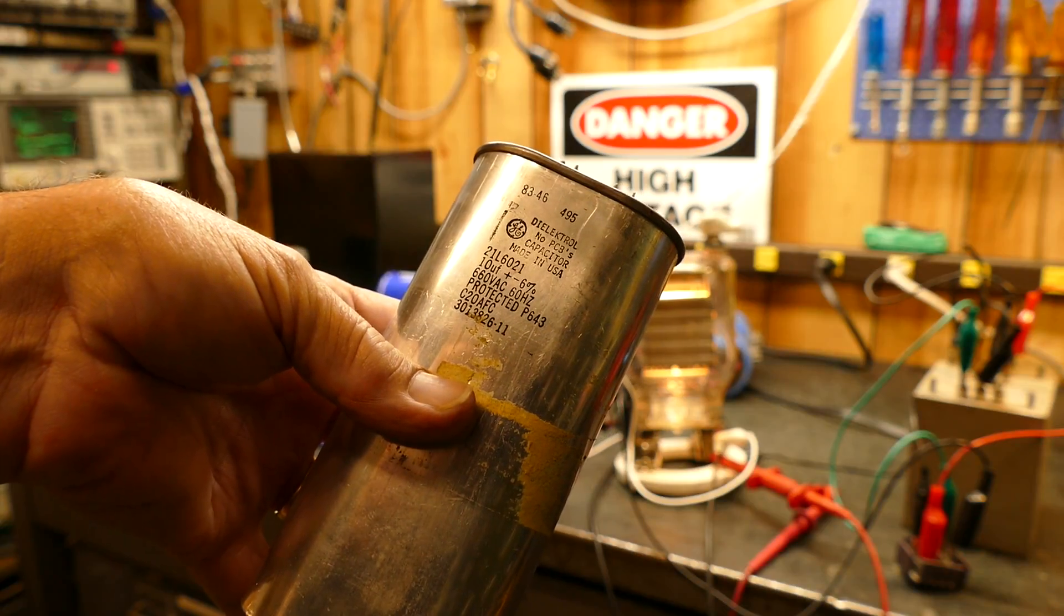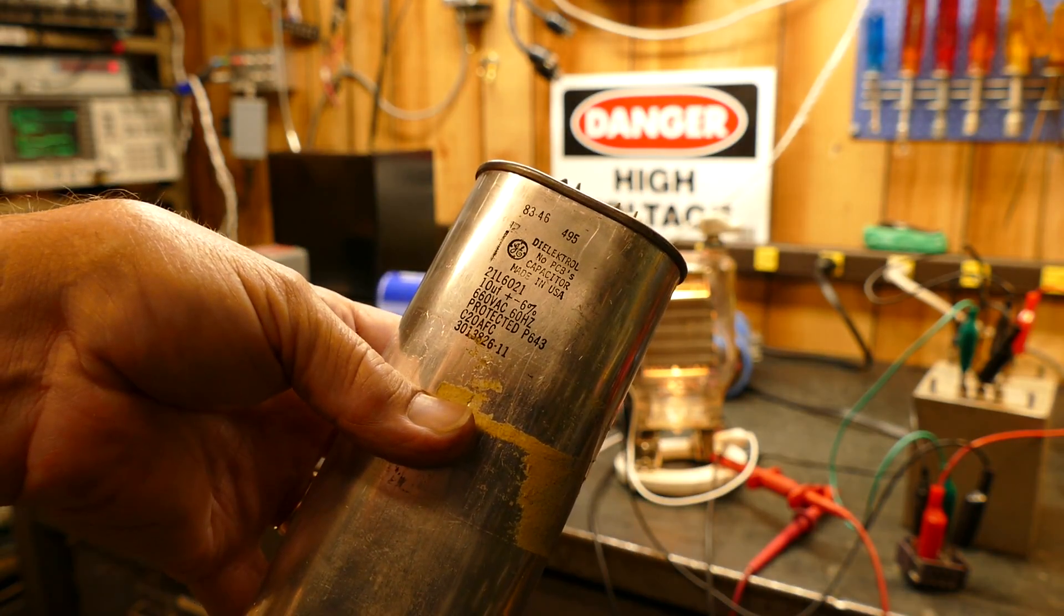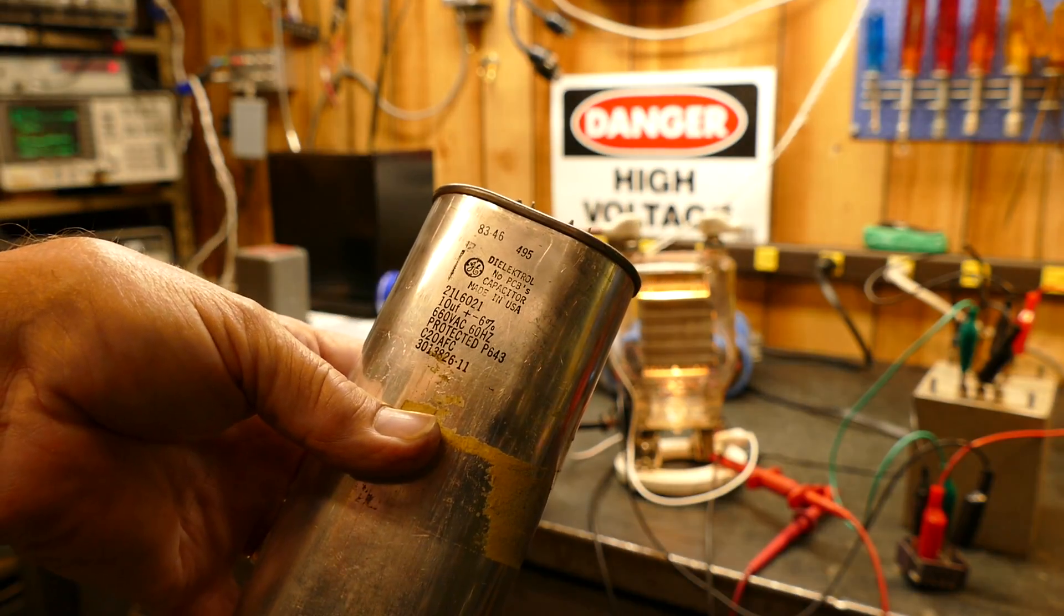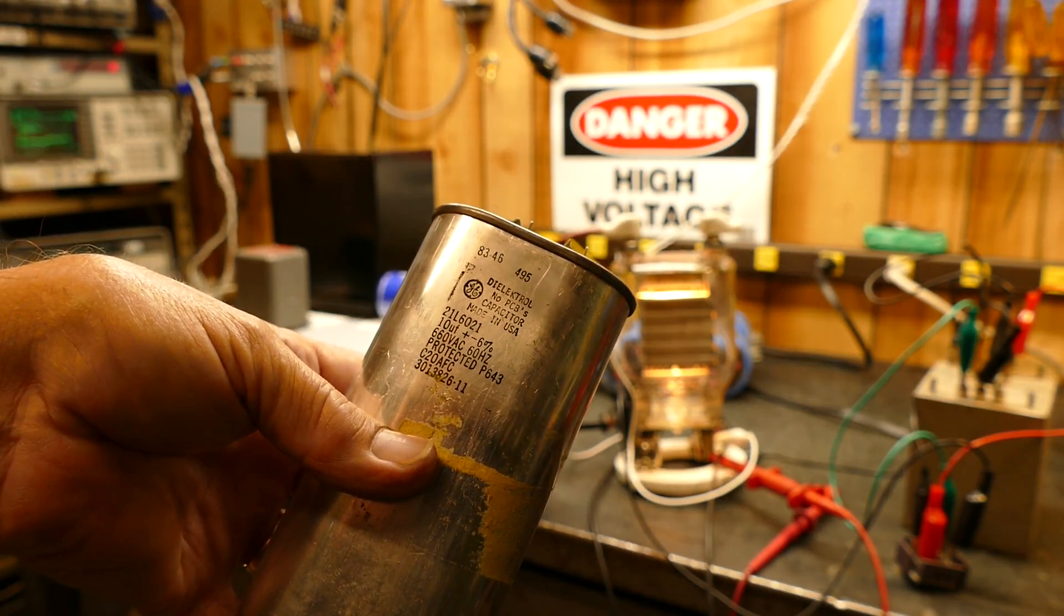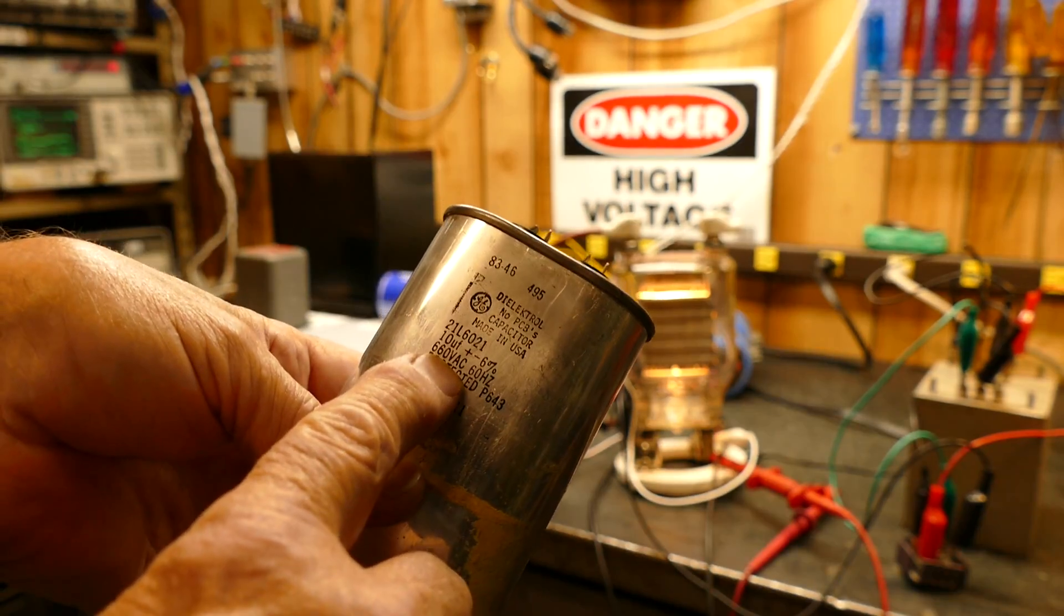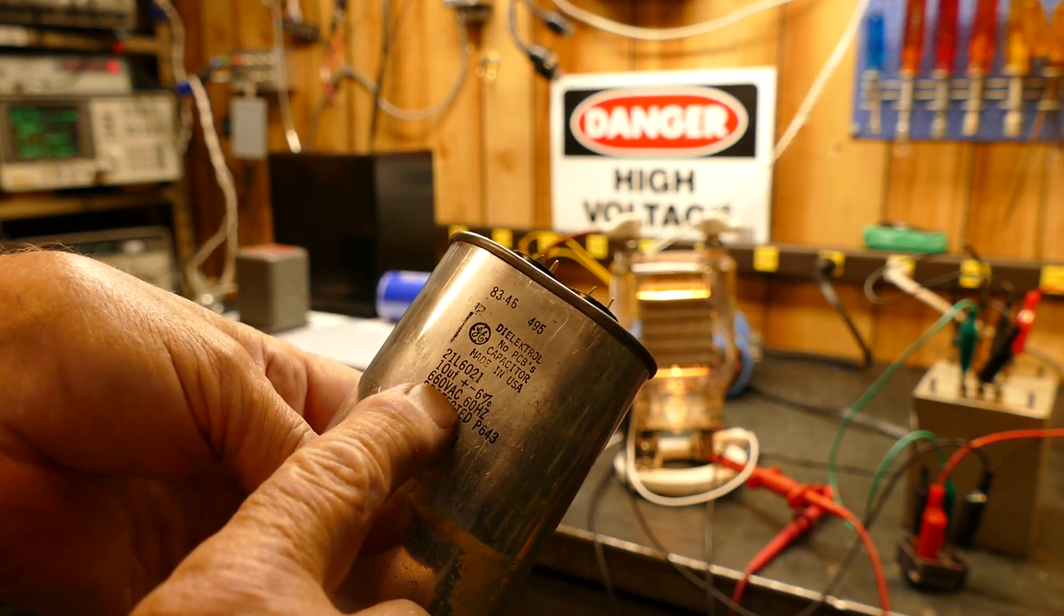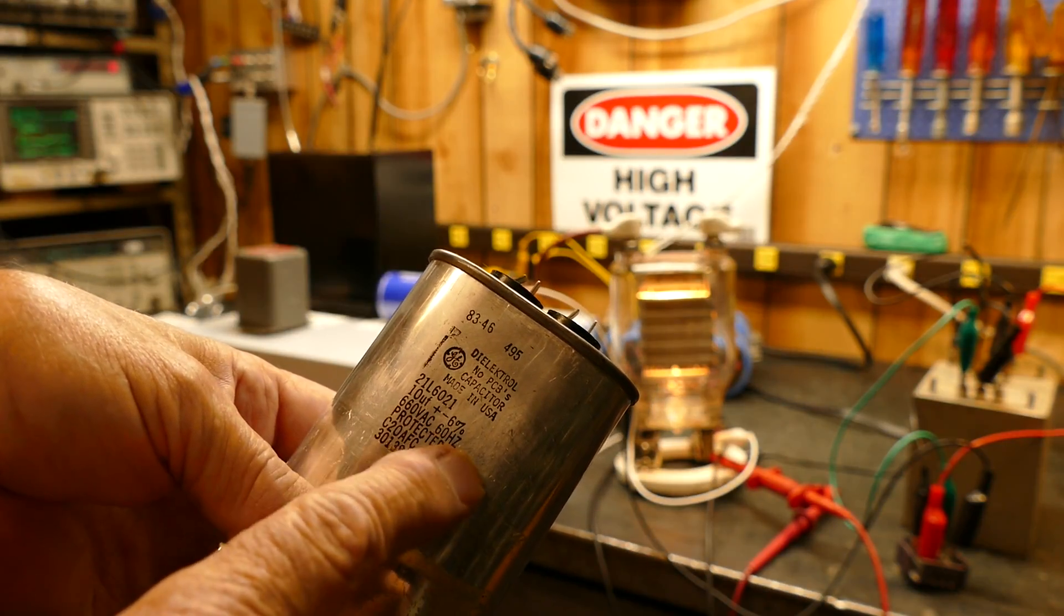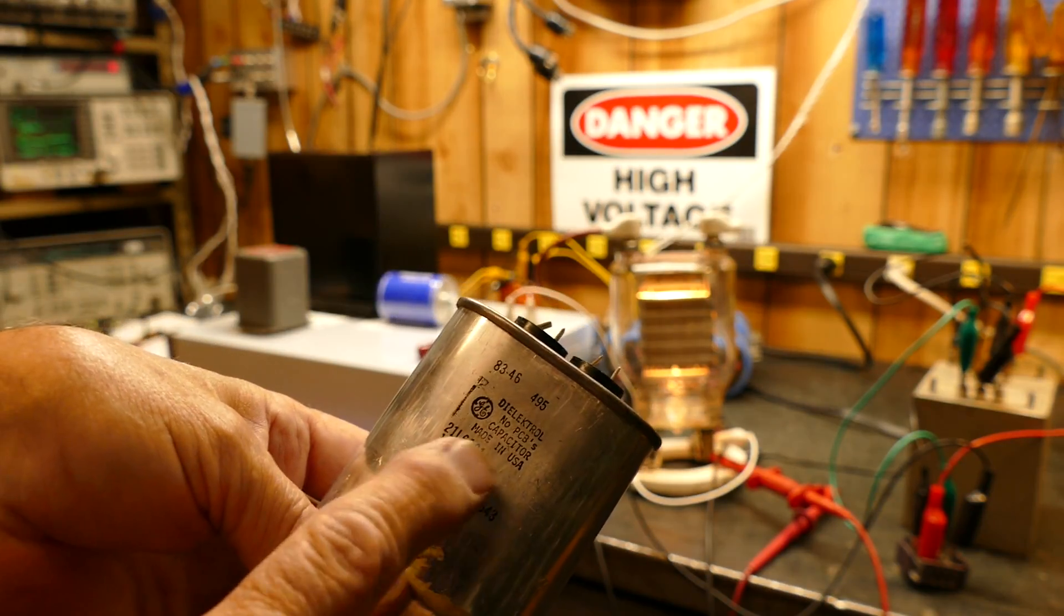I don't know if you know that or not. We won't get into all the details of AC, but anyway, 660 volts AC - it's 2 times the square root of 2 times this - is its DC rating, which is approximately 3, or 2000 volts at least.